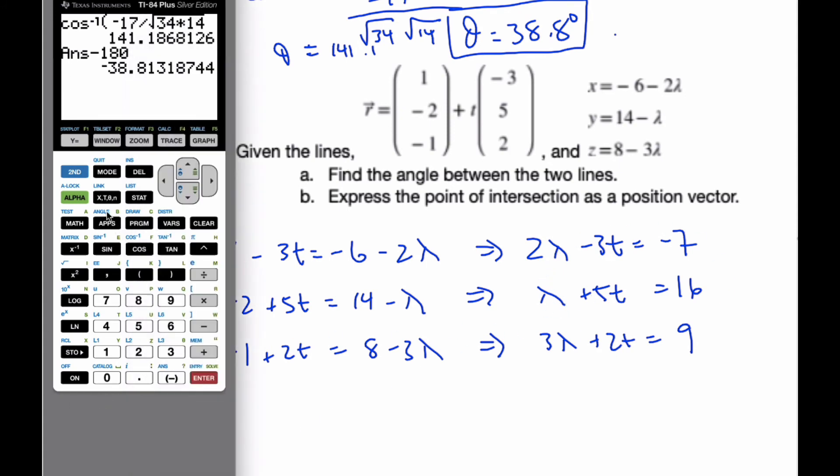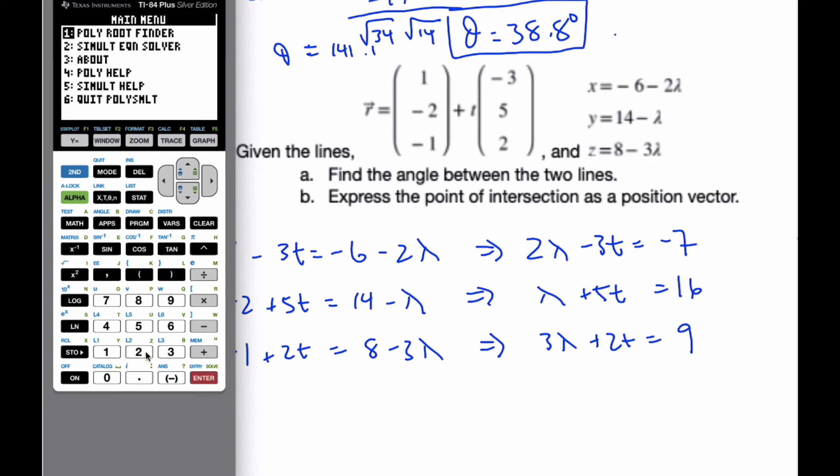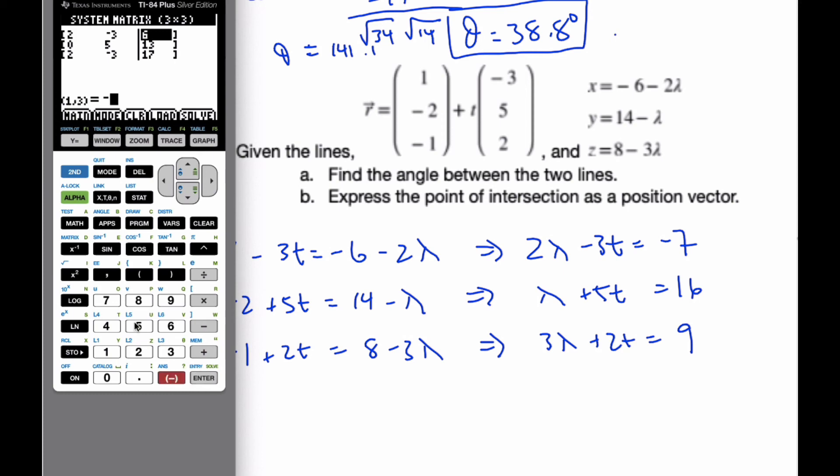If I go over to my calculator, I'm going to go polysimultaneous, number 2. And I have actually three equations, two unknowns. So let's put them in as such. I get 2 minus 3 and negative 7.